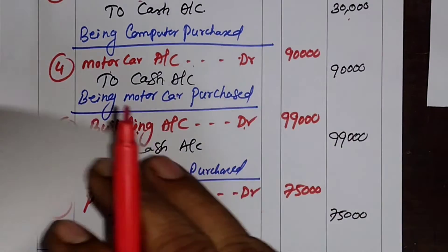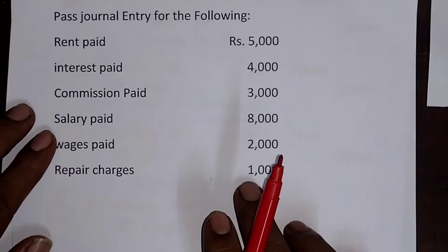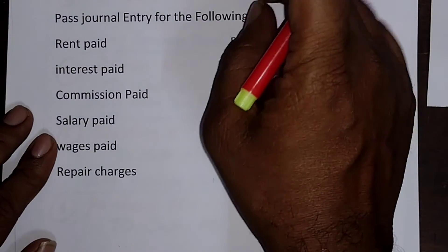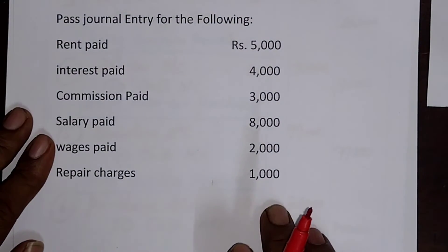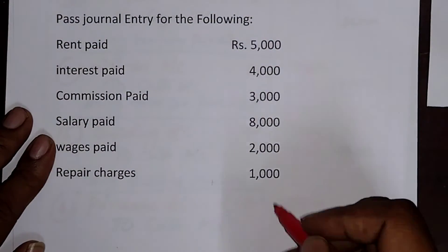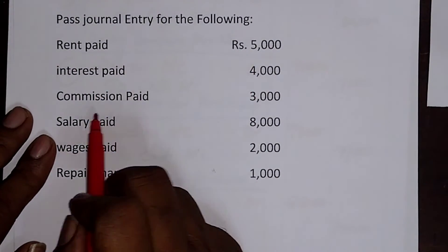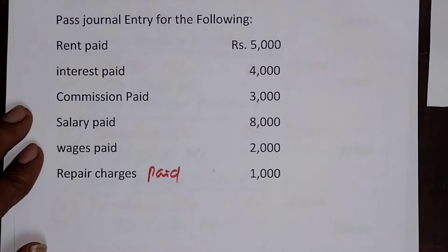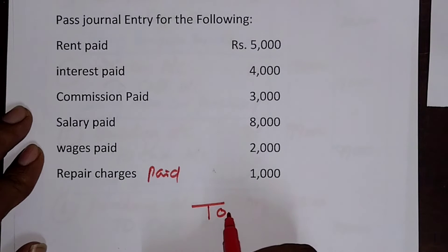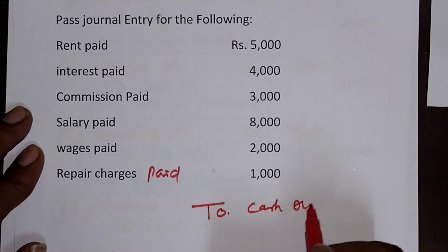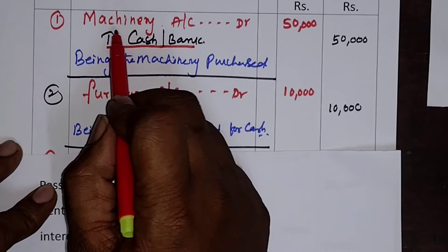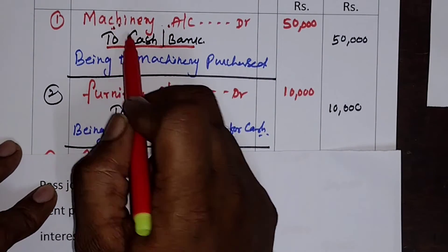Now I will include another set of entries. Even here, cash goes out for various other reasons — not just for purchasing assets and goods. Cash is also going out for rent paid, interest paid, commission paid, salary paid, wages paid, and repair charges paid. In all these cases, the credit line is To Cash Account. The debit line, instead of an asset, will be the expense account.